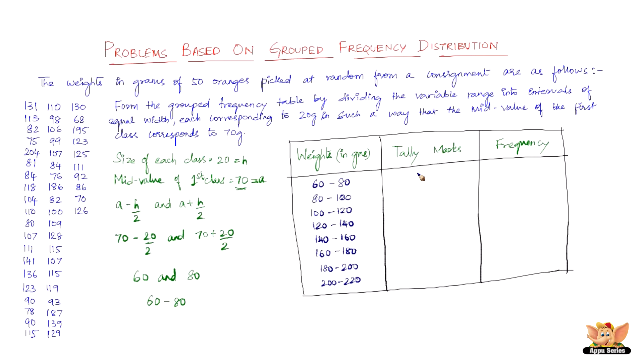Now for the tally marks: you're supposed to count all values and categorize them into classes. Since that's time-consuming, I'll directly write the frequencies. Between 60 and 80, we have 5. Between 80 and 100, we have 13. Between 100 and 120, we have 17. Between 120 and 140, we have 10.